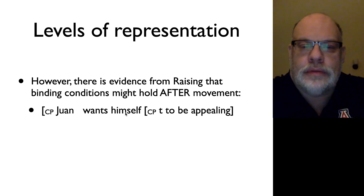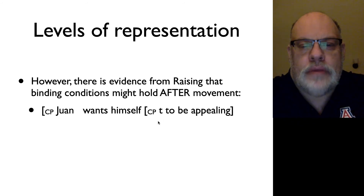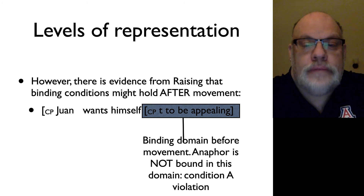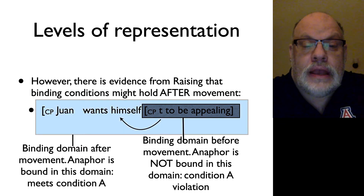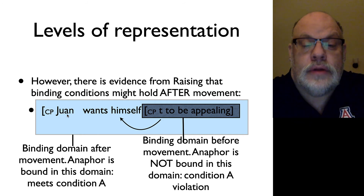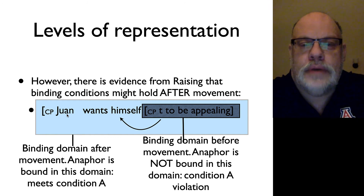Our previous example showed cases where anaphors had to meet condition A before they moved, and here we have a case where an anaphor must meet condition A only after movement. This is a real problem for us. The binding domain at D-structure does not contain an antecedent, but after you do the movement, the binding domain shifts — the anaphor shifts and finds a new binding domain where it can find an antecedent. So it meets condition A after movement. We have a conflict: some evidence that it's before movement, and some evidence that it's after movement. So where do binding conditions hold?